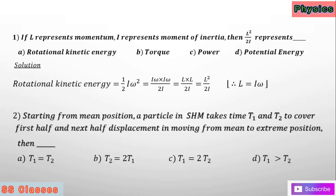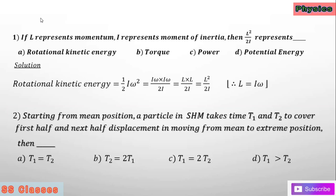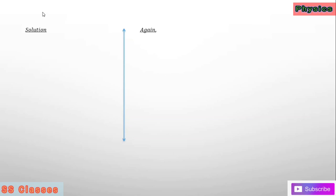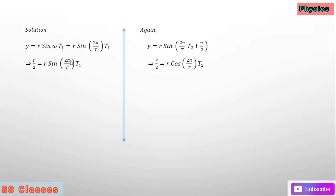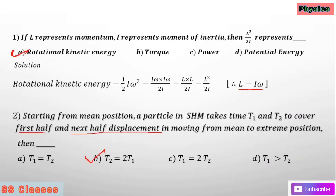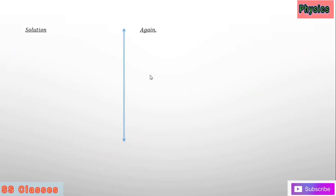Question number two: a particle executing simple harmonic motion takes time t1 and t2 to cover the first half and next half displacement moving from extreme position. The answer is option B: t2 equals two times t1.